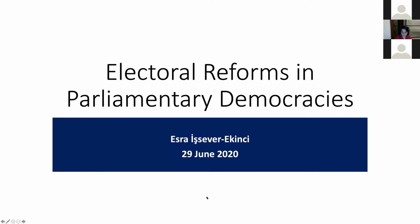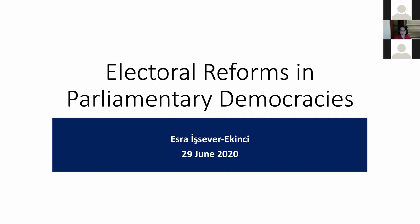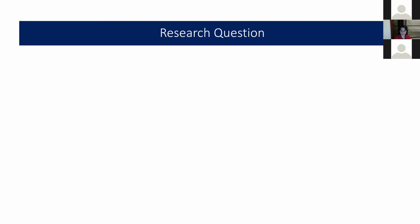The paper I'm going to be presenting today is about electoral reforms in parliamentary democracies. The research question I'm tackling is why and when democracies change their electoral rules. These questions have been addressed mostly in case studies and to some extent in cross-country comparisons. One common point in all these existing studies is that they predominantly focus on the successfully implemented electoral system changes, and less attention has been devoted to the attempted but failed reforms.